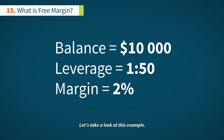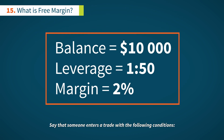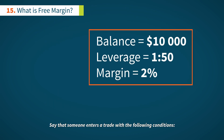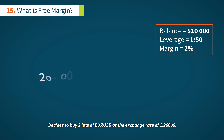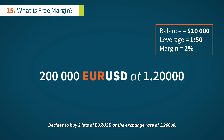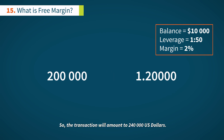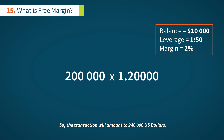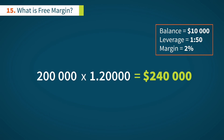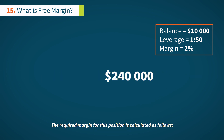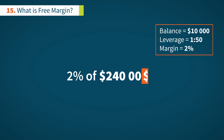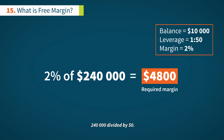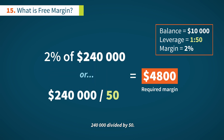Let's take a look at this example. Say that someone enters a trade with the following conditions — decides to buy two lots of EURUSD at the exchange rate of 1.20. So the transaction will amount to 240,000 US dollars. The required margin for this position is calculated as follows: 240,000 divided by 50.